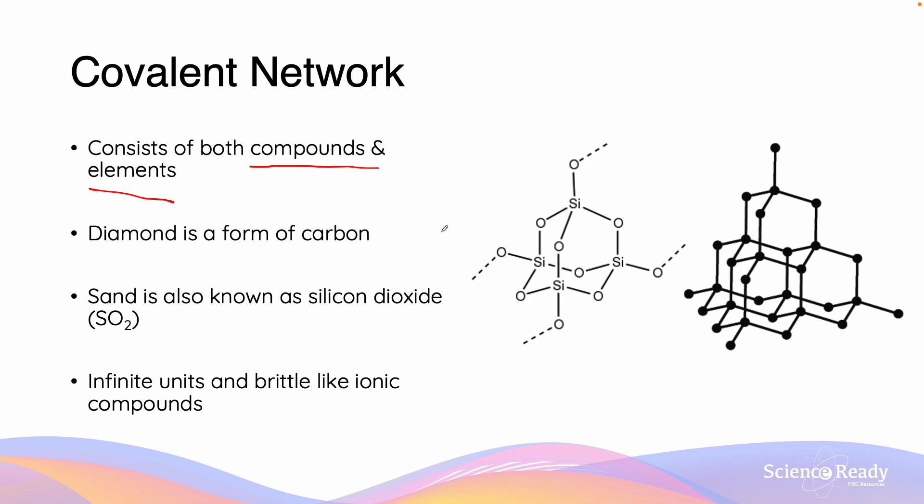Here we have two examples. On the right hand side we have diamond. Diamond is a covalent network substance which is created by this tetrahedron structure of infinite numbers of carbon. Because diamond only contains carbon, while it's a covalent network structure, this is also going to be an element.